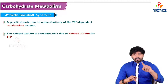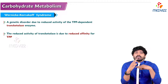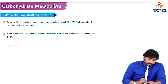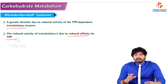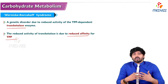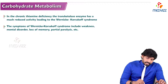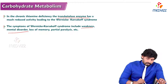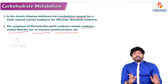Wernicke-Korsakoff syndrome is caused by deficiency in the non-oxidative phase of HMP shunt. The transketolase enzyme depends on the coenzyme TPP; when there is deficiency of TPP, transketolase activity is reduced. This disorder is seen in chronic alcoholics because ethanol inhibits the absorption of TPP. In chronic thiamine deficiency, transketolase has much reduced activity, leading to Wernicke-Korsakoff syndrome. Symptoms include weakness, mental disorders, loss of memory, and partial paralysis. These are the key points about HMP shunt. Thanks for watching.